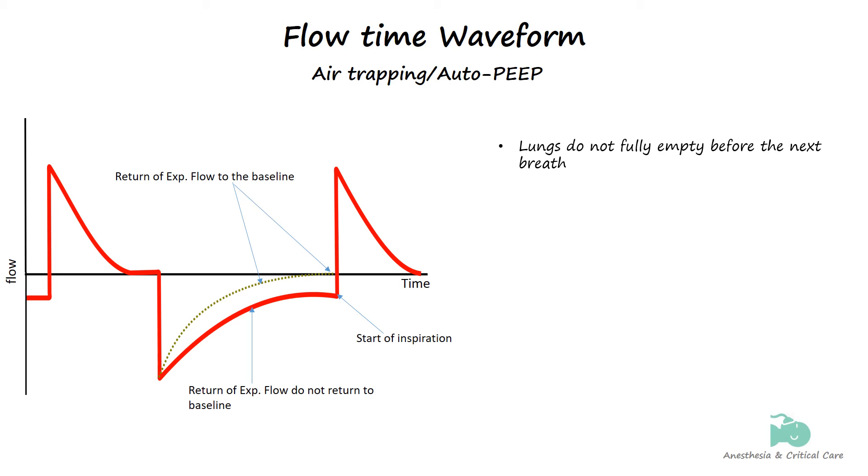Instead, the flow curve is cut off, indicating that exhalation is incomplete when the next inspiratory phase starts. Air trapping can result from inadequate expiratory time, increased airway resistance as seen in COPD or asthma, high tidal volumes, or a high respiratory rate.